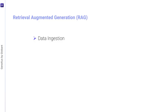It's followed by the retrieval phase. In this stage, the data retrieval process is started, taking advantage of the previously loaded and organized information. A selective search is performed on a set of documents, identifying related information and efficiently reducing the search space. This approach ensures that focus is placed on the most relevant and meaningful information.